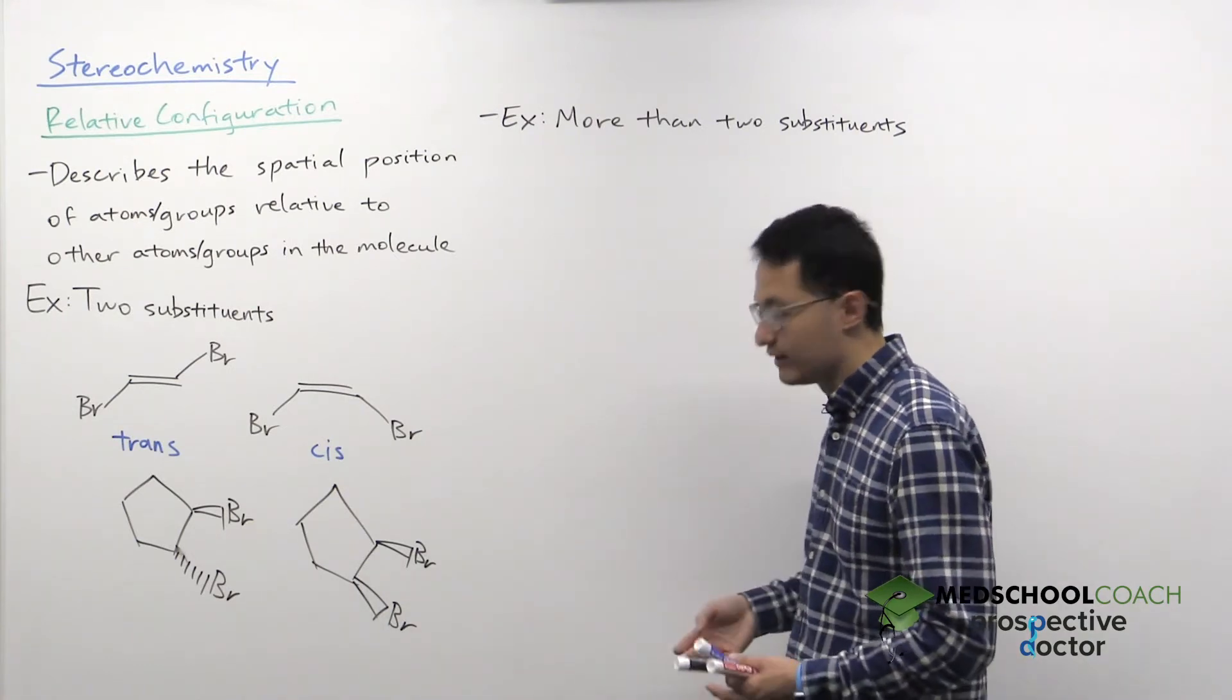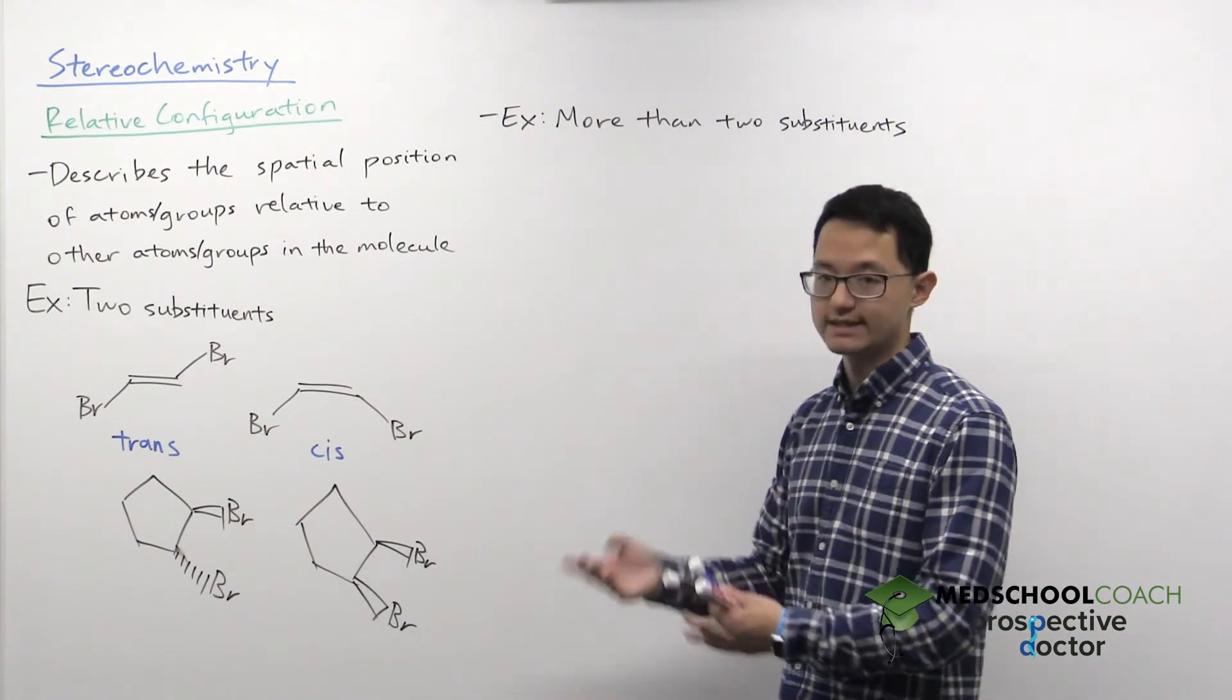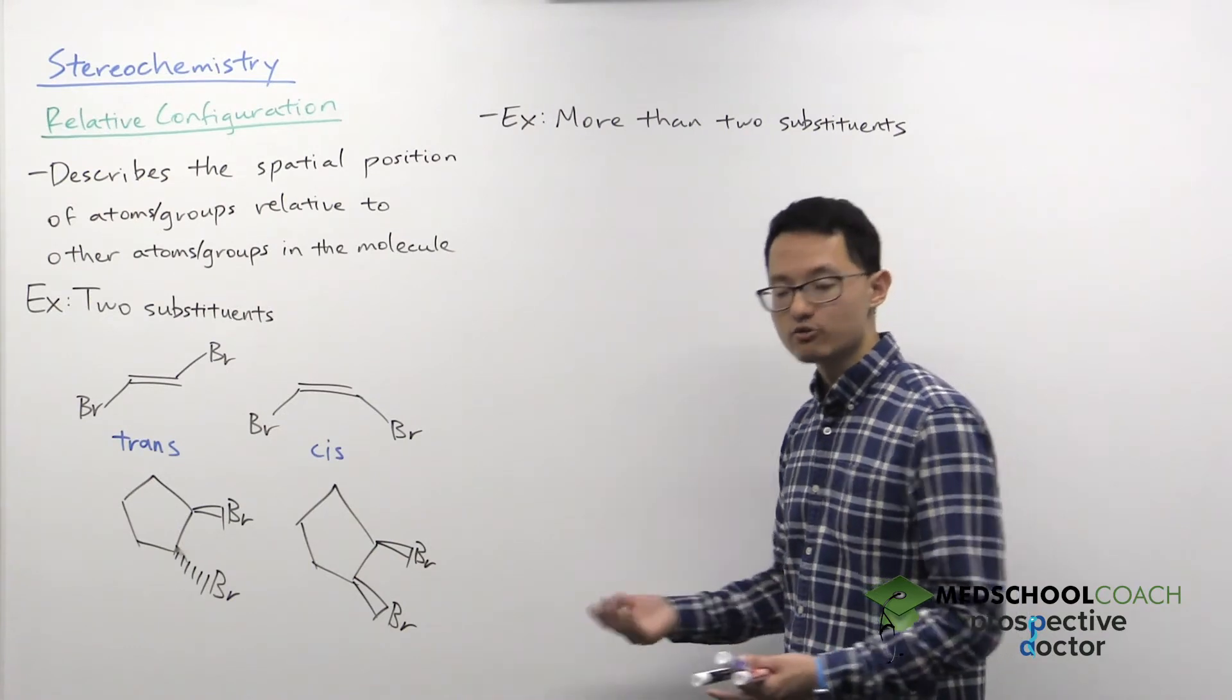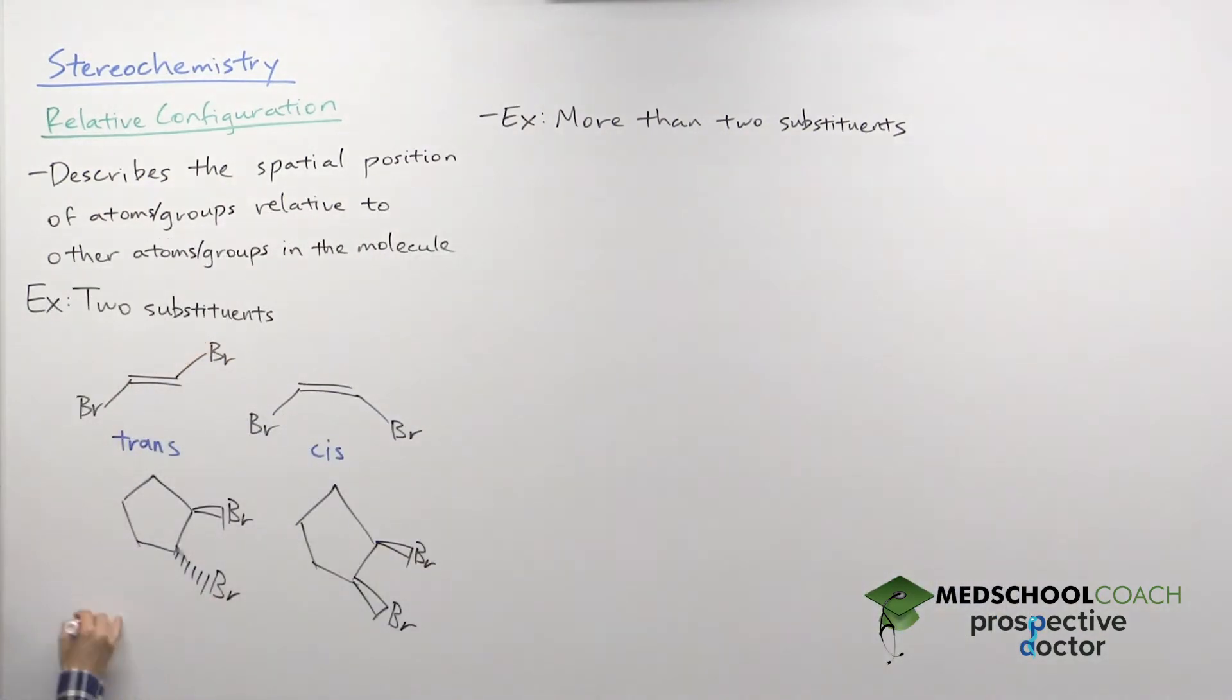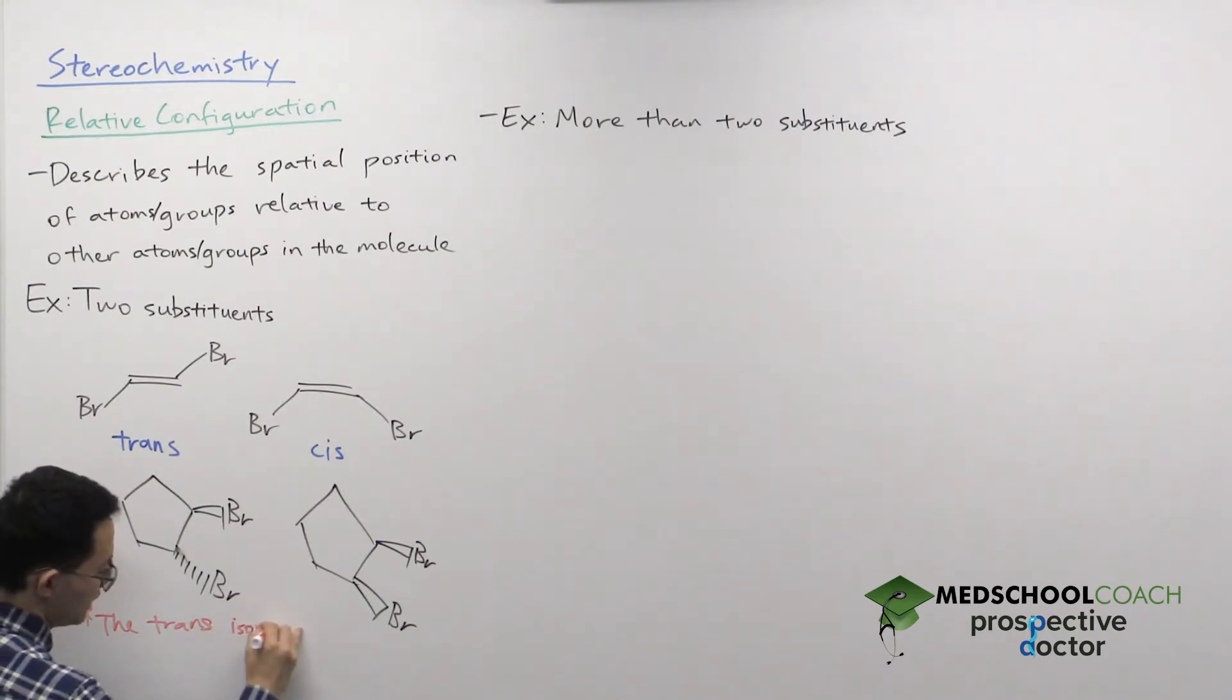Now, another good thing for you to keep in mind for the MCAT in terms of trans and cis is knowing which one is more stable. And generally, the trans isomer is more stable than the cis isomer.